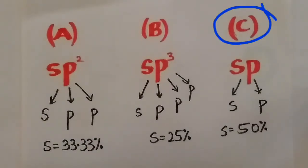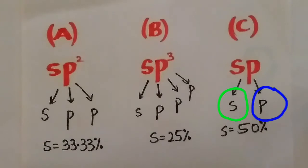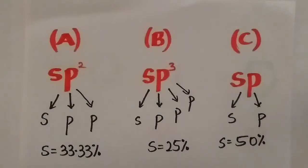In molecule C, the hybridization is SP, one S and one P orbital. Therefore the S character is 50%. Therefore molecule C has the greatest bond dissociation energy.